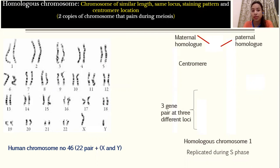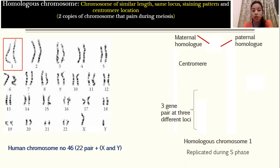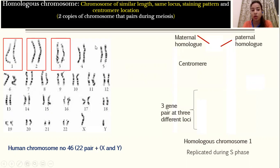One more interesting feature is that homologous chromosomes can pair during meiosis, and we would have two copies of the chromosome. Let's take the example of the human karyotype. The human karyotype has 46 chromosomes, where 22 pairs are present as homologous pairs, plus X and Y. In males we have X and Y, and in females X and X. So chromosomes one, two, three — all 22 pairs have similar homologous chromosomes.